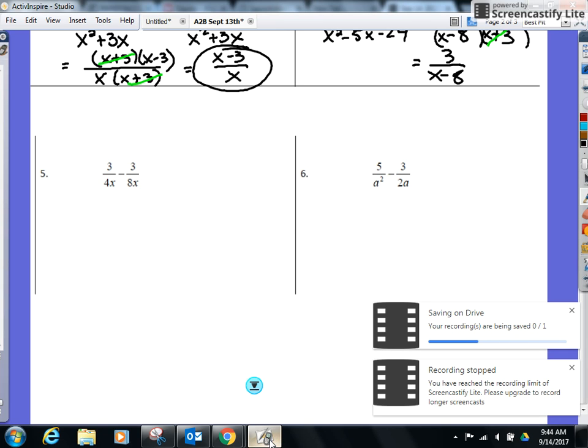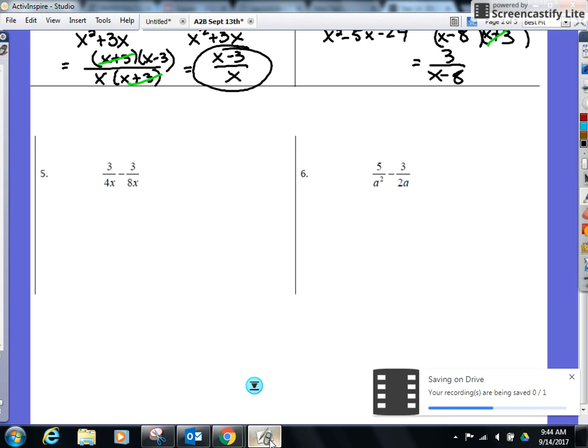All right. 4x and 8x. We have to find a common denominator. Are we all clear we can't do anything right now until we find a common denominator? Let's start with the 4 and the 8. Smallest number both go into.